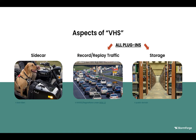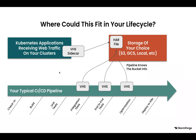So where would something like VHS fit into your lifecycle today? You've got this record and replay tool, so you throw it in as a sidecar on your Kubernetes application. If it's receiving web traffic, it would take those HTTP manifests, store them as a HAR file — standard HTTP archive — in the storage of your choice. Then as you approach your CI/CD pipeline, it can play back that traffic into any number of stages. A typical CI/CD pipeline I've seen many times: check in your code, do your build, run your unit tests, integration tests, additional end-to-end tests, optimize the application, and then finally deploy into your production environments.